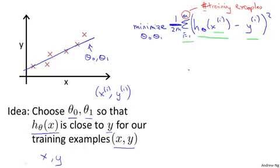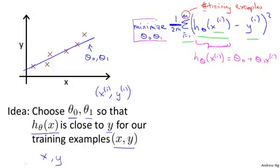So minimizing 1 half of something should give you the same values for the parameters theta 0 and theta 1 as minimizing that function. And just to make sure this equation is clear, this expression in here, h subscript theta of x, this is our usual, that's equal to theta 0 plus theta 1 xi. And this notation, minimize over theta 0 and theta 1, this means find me the values of theta 0 and theta 1 that causes this expression to be minimized. And this expression depends on theta 0 and theta 1.